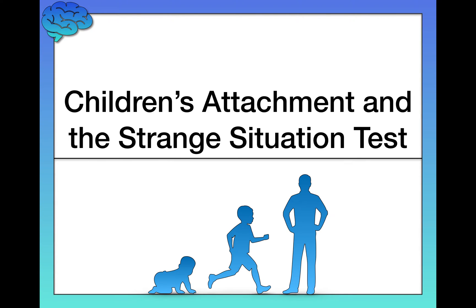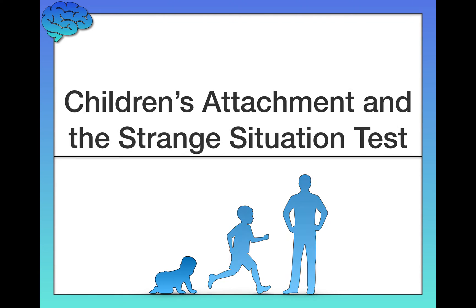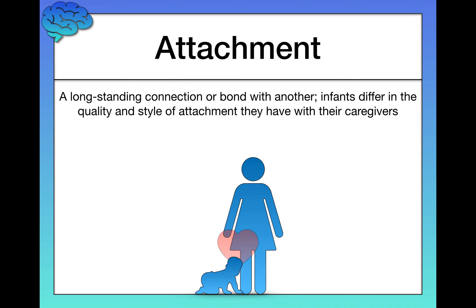In this video, we're going to continue our discussion of developmental psychology or child psychology by learning about the different types of attachments that children can have with their caregivers and how we measure those attachments from a psychological perspective. An attachment is a long-standing connection or bond with another. Importantly, infants differ in both the quality and the type of attachment that they have with their caregivers.